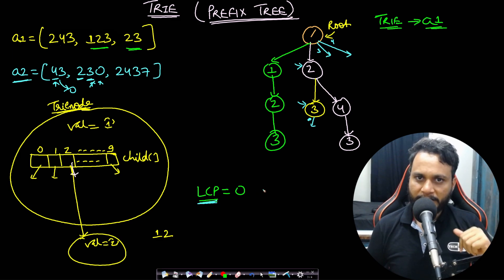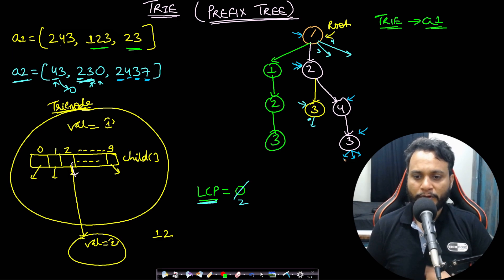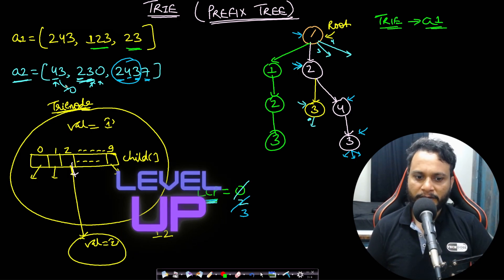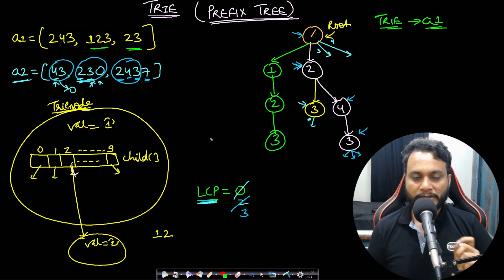Now matching 2437: from root, pointer to 2 exists. Next digit 4 — pointer to 4 exists. Next digit 3 — pointer to 3 exists. Next digit 7 — no pointer to 7. So the maximum length matched is 3 characters. We maximize our LCP variable and update it to 3. We've now matched all numbers of array 2 against all possible numbers of array 1 in linear time — each string search is linear. This is how we solve it using the Trie approach.